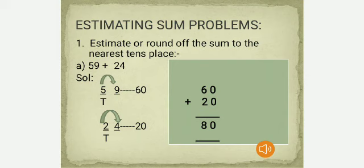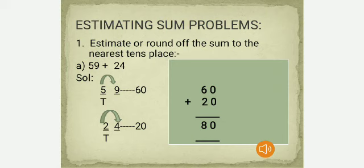Now, estimating sums. Estimate or round off the sum to the nearest tens place. First: 59 + 24. For 59, the next right digit is 9, which is more than 5, so it rounds up to 60. For 24, the next right digit is 4, which is less than 5, so it rounds down to 20. Adding 60 + 20 gives an estimated sum of 80.